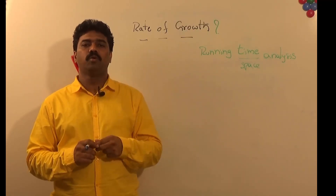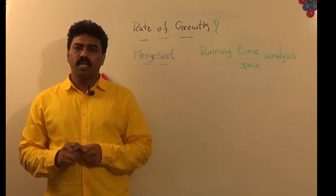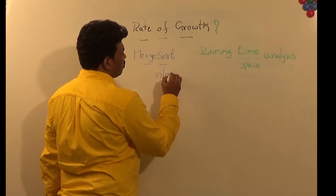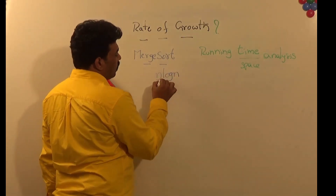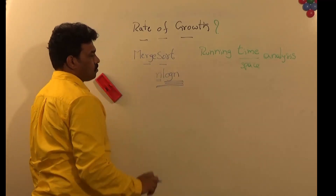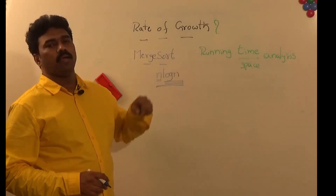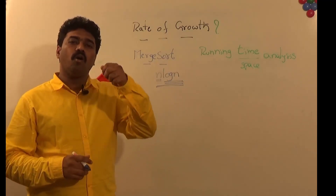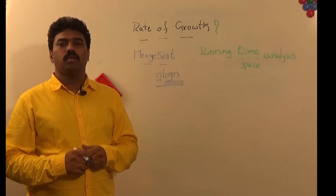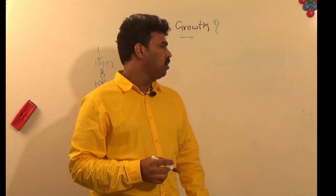For larger values of input, how the algorithm is behaving — that we represent in terms of rate of growth. As an example, consider mergesort. The mergesort complexity is n log n, where n is the input — the number of elements in the given array. n log n is the rate of growth, meaning how the algorithm behaves as we keep increasing the input size. That is what we call the rate of growth for mergesort.